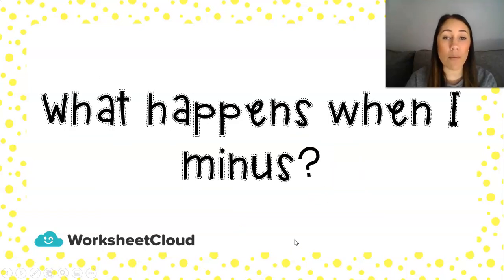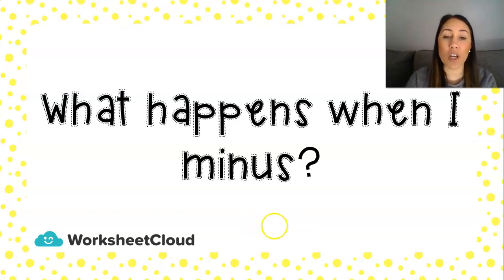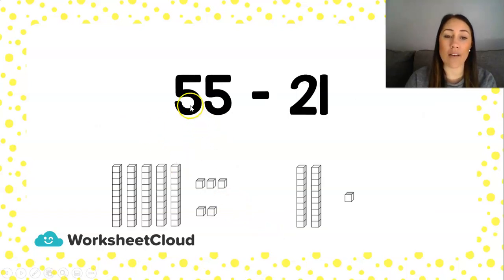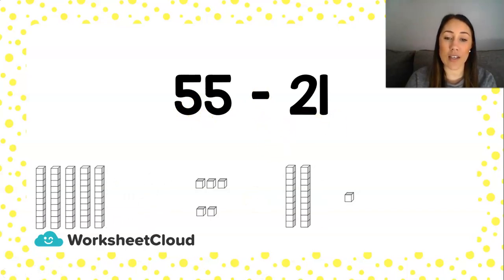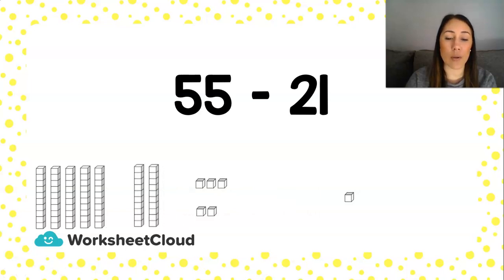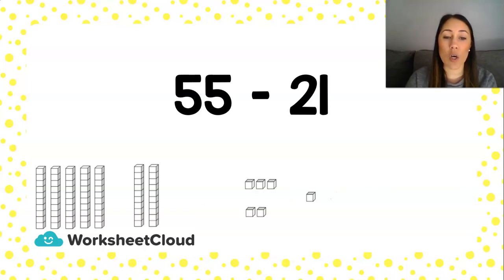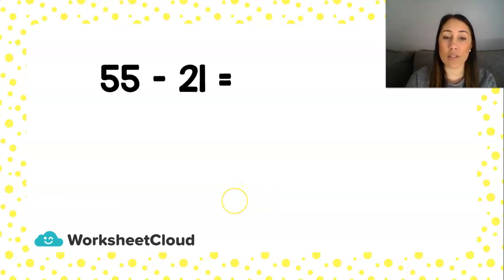Now what happens when I minus? I can use exactly the same method — I'm just going to minus instead of plus. So with the same example, I have 55 minus 21. I'm still going to group all my 10s together, the 50 and the 20, and I'm still going to group all my units together, the 5 and the 1. But now instead of adding them, I'm going to subtract. This is what my sum is going to look like.